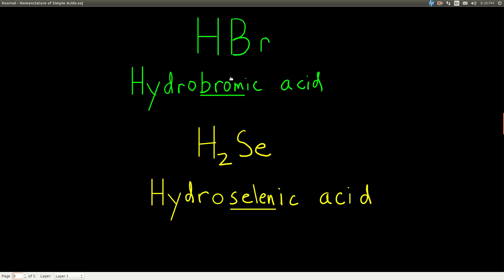And so we're going to fill in the blank here with the root name of the anion. The anion is bromide. Bromide, the root is brome, so hydrobromic acid.